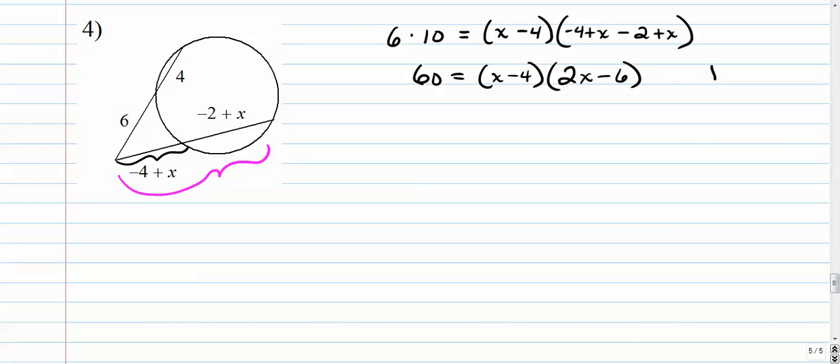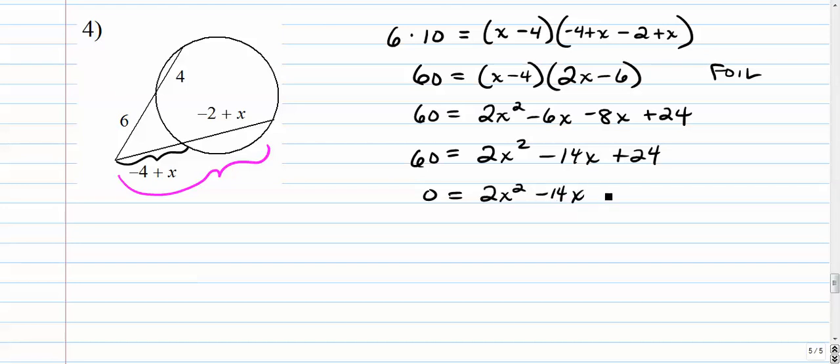Alright, so here we go. We have to FOIL this guy. We have to FOIL this guy. And we're going to go 60 equals 2x squared. I'll go a little faster here. I assume that you know how to do some basic algebra. Combine those O and I terms. Subtract 60. We want to get all the terms on one side. And that's our quadratic.